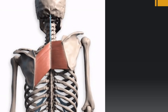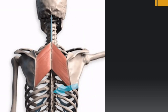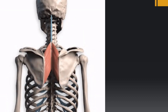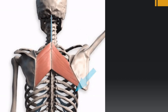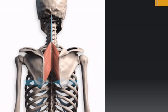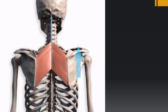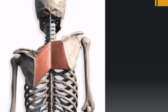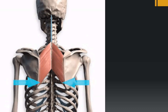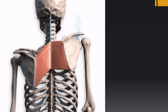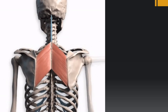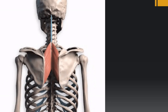The action of the rhomboids is retraction of the scapula, as in squaring the shoulders. Retraction of the scapula is carried out by the rhomboid muscles and also by the middle fibers of the trapezius muscle.